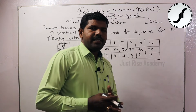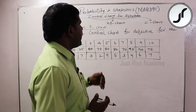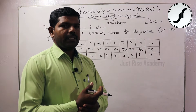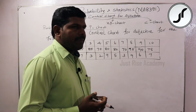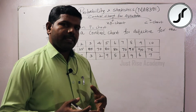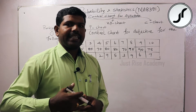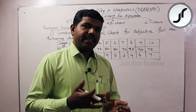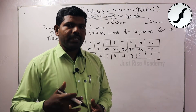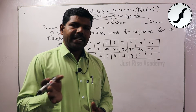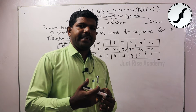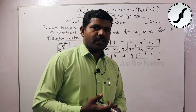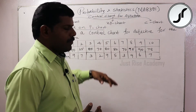Probability and statistics, fifth unit: statistical control chart. We have two types of control charts — control chart for variables and control chart for attributes. For variables, we have the mean chart as well as the range chart, which we already studied. Today we are going to study control chart for attributes, which has three types of charts.